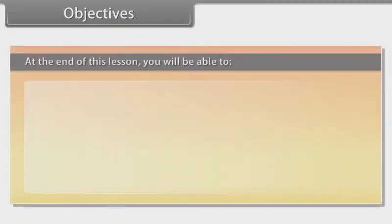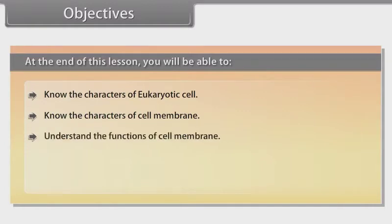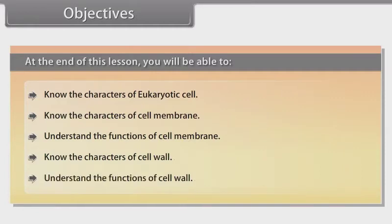Objectives. At the end of this lesson, you will be able to: know the characters of eukaryotic cell; know the characters of cell membrane; understand the functions of cell membrane; know the characters of cell wall; and understand the functions of cell wall.